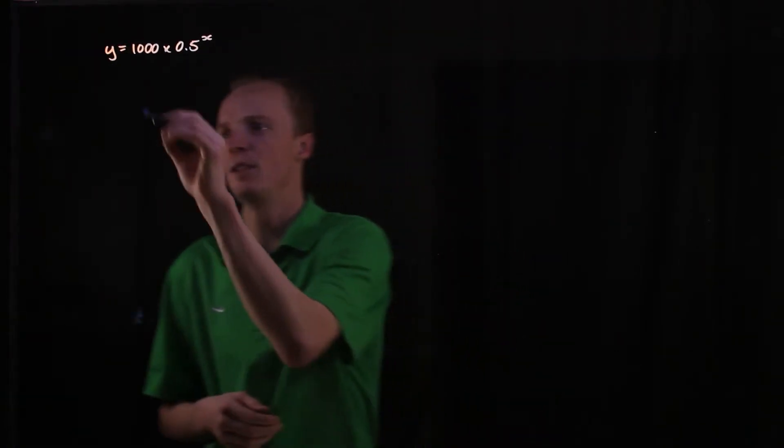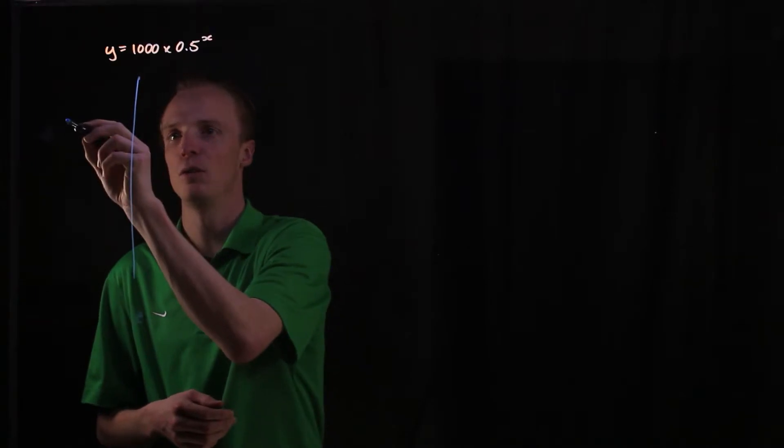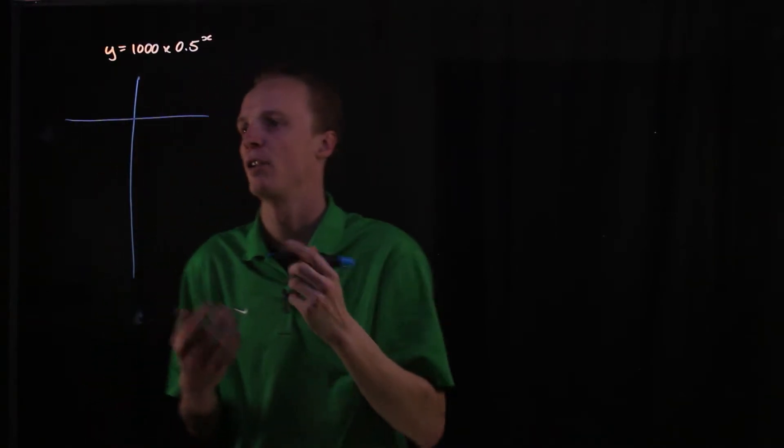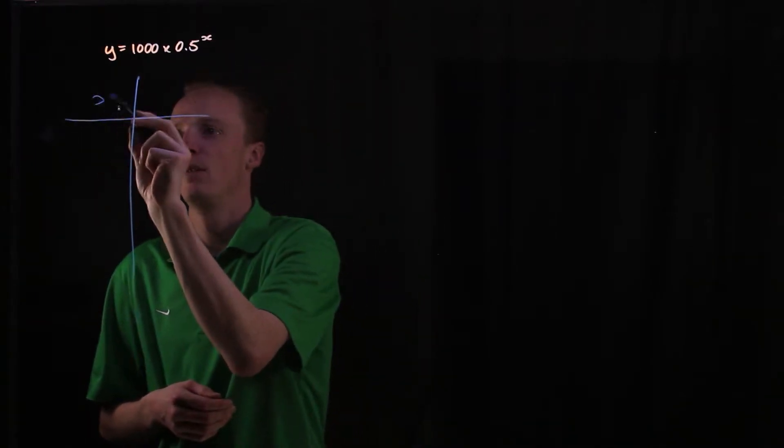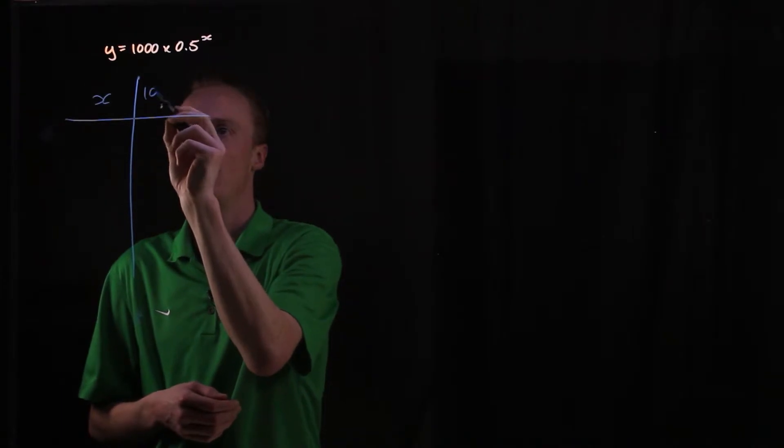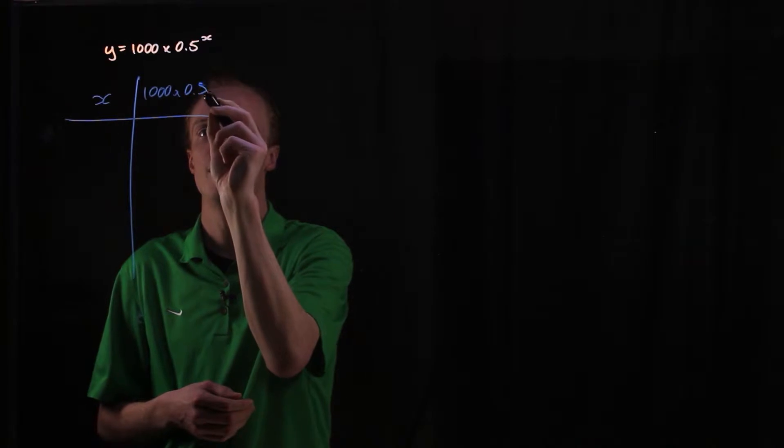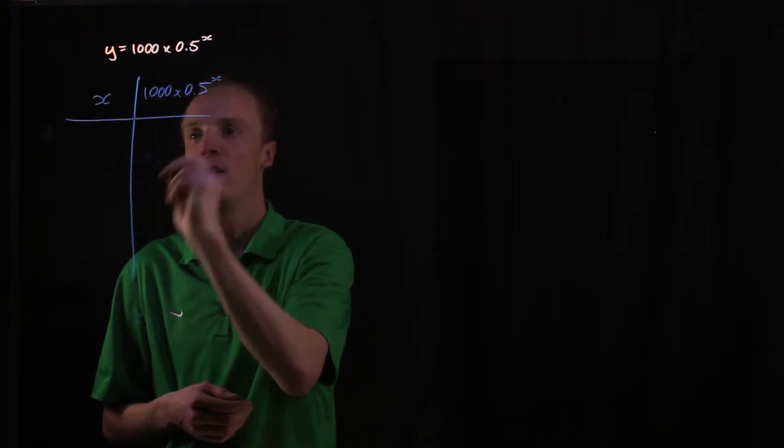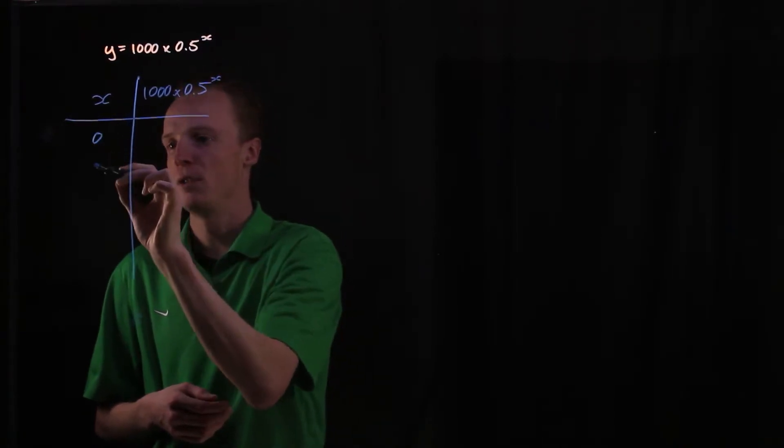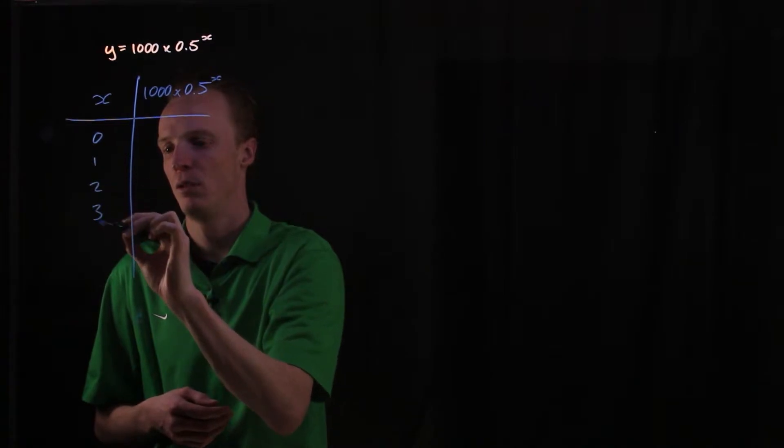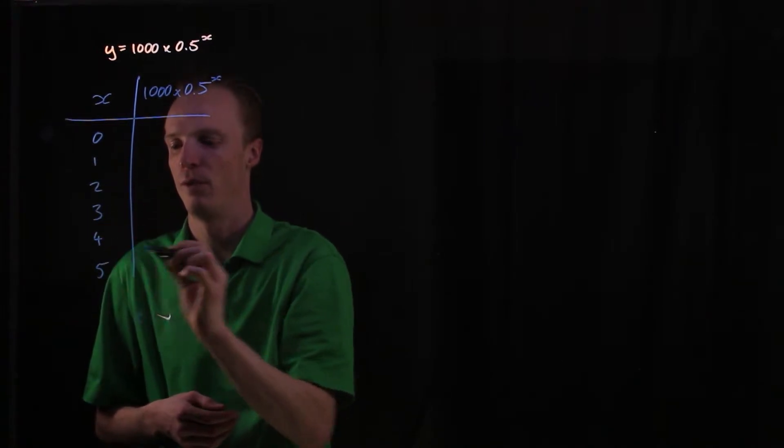So let's create a table of values here and have a look at what this graph actually looks like. So for our input of x we're looking at an output of 1000 multiplied by 0.5 to the power of x, and we'll go from 0 through to 5 like that.